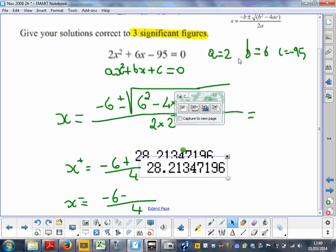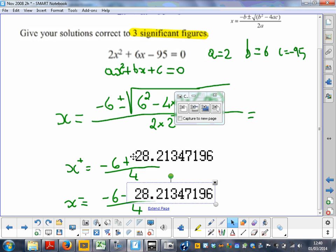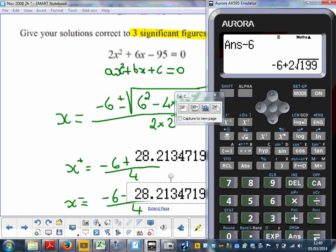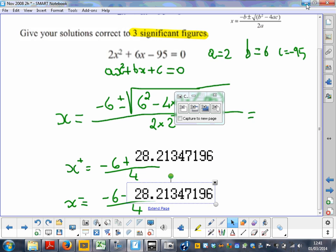Now all I have to do is do this plus this, divided by 4. The first answer to three significant figures, one, two, and three, should be 5.55.